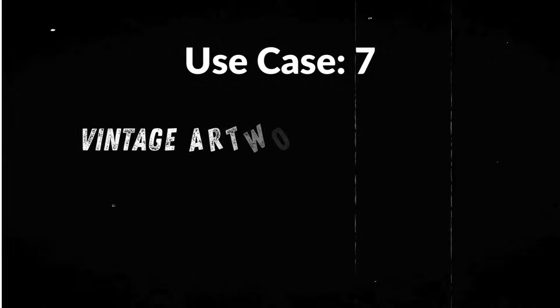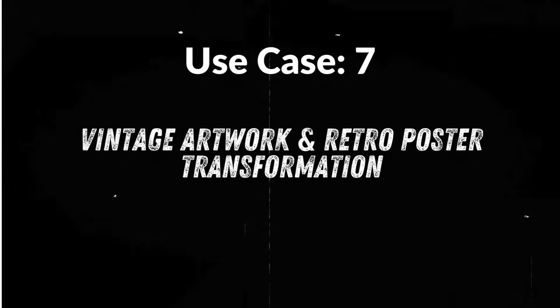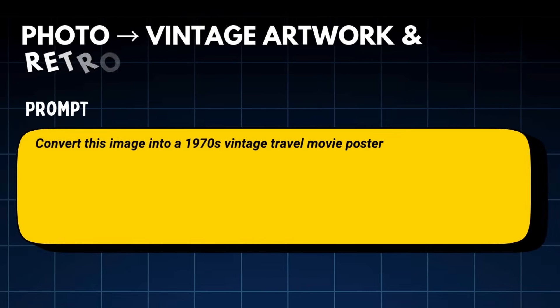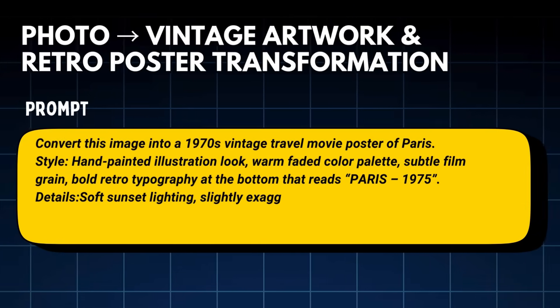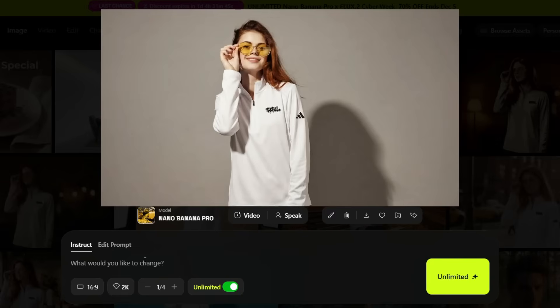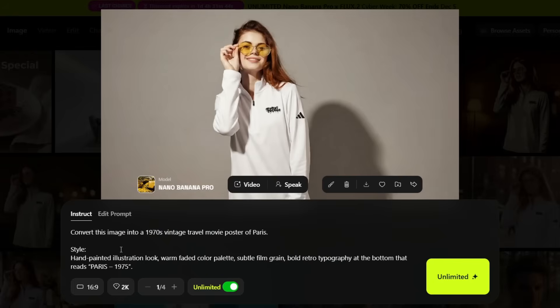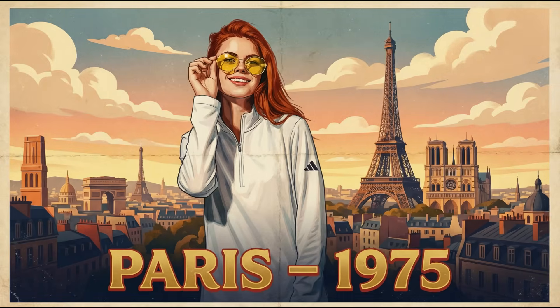Now we move into something more artistic. Nano Banana Pro doesn't just recreate reality — it can also send your images back in time by transforming modern photos into vintage cinematic posters from past decades. With the prompt 'Convert this image into a 1970s vintage travel movie poster of Paris,' look at the faded color tones — it looks like a real poster printed in the 1970s.